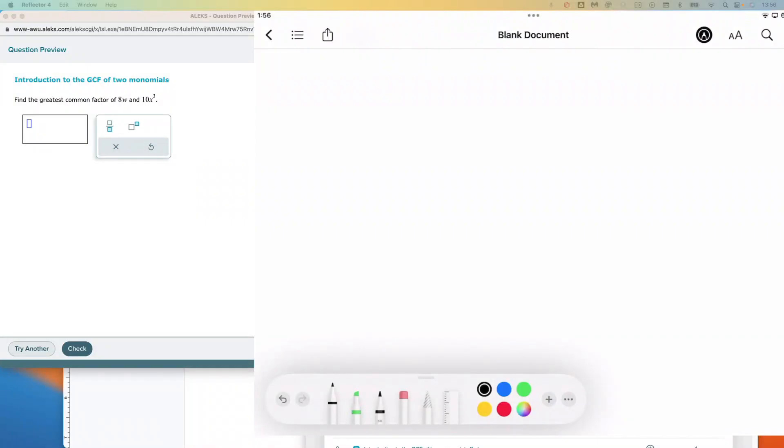Similar to factoring, we are asked to find the greatest common factor of these two monomials. We have two things to consider: the number piece and the variable piece.